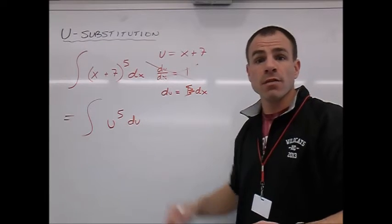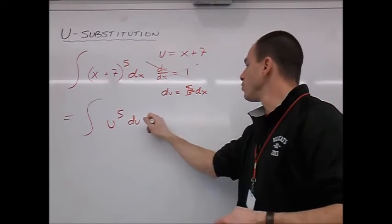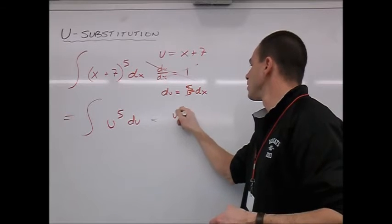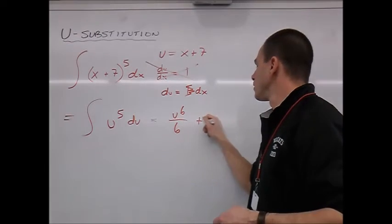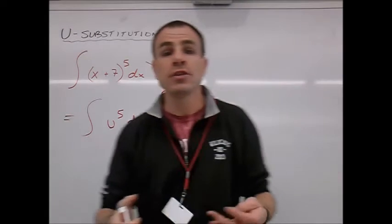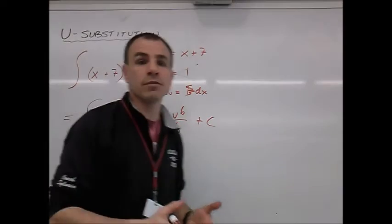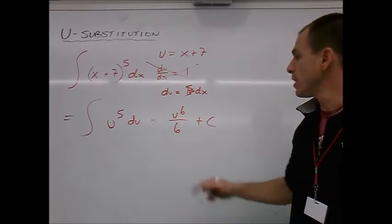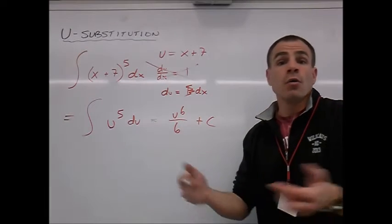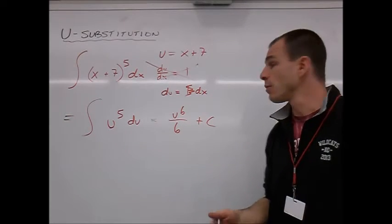What's the antiderivative of u to the 5th? Exactly. It's going to be u to the 6th over 6 plus c. We're going to treat it just like if it was x to the 5th dx. That's a nice basic antiderivative. We don't really care what the variable is. Whether it's x or u or some other variable, it doesn't matter.